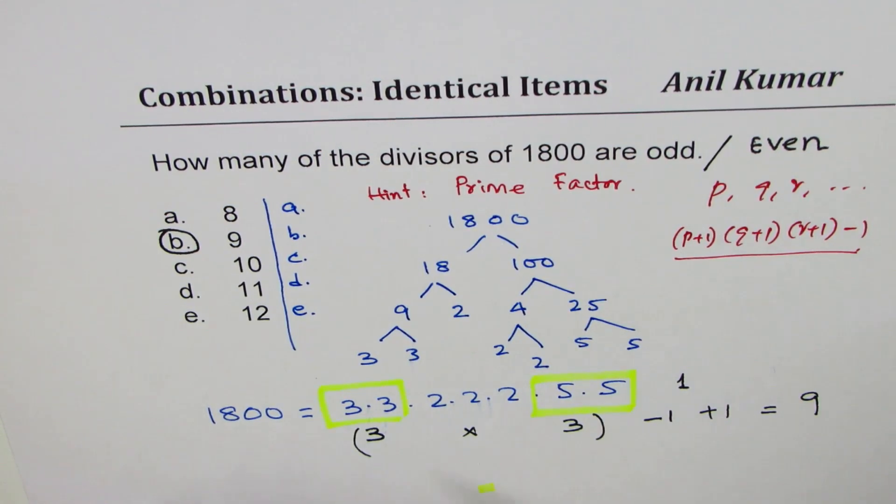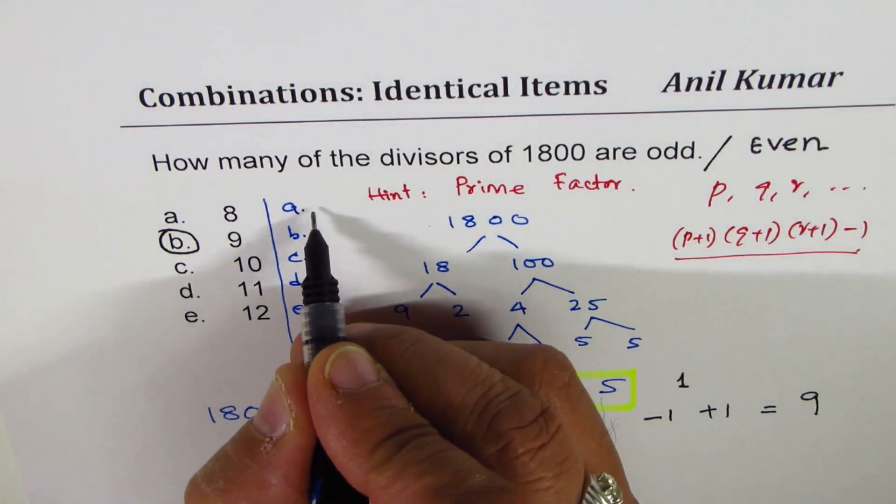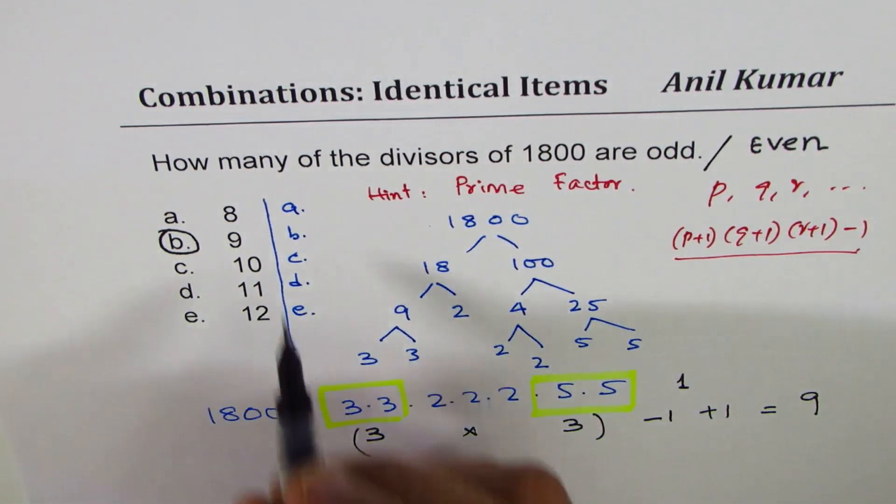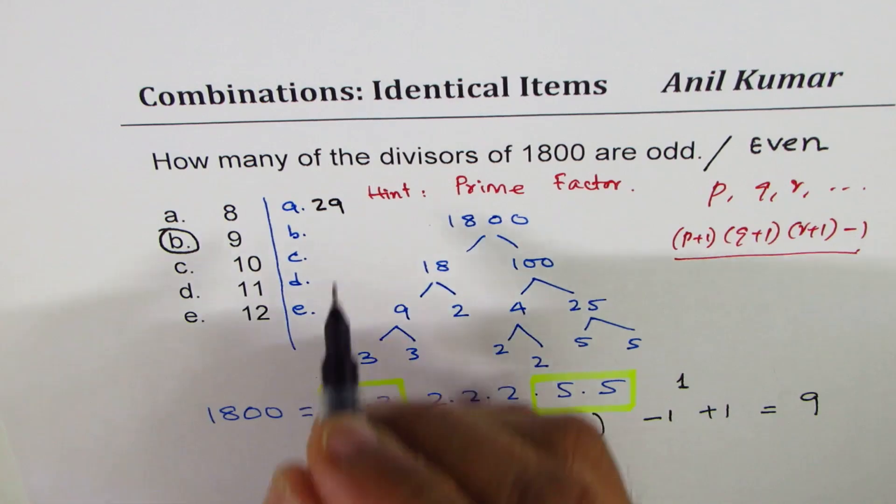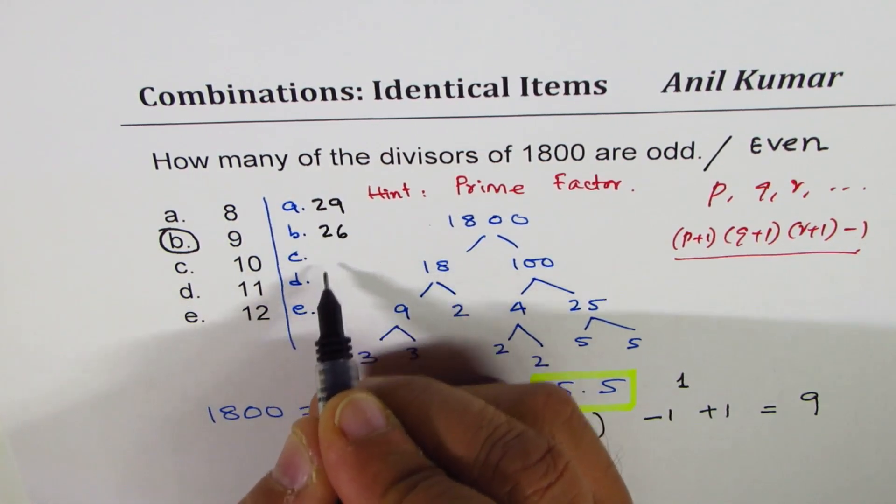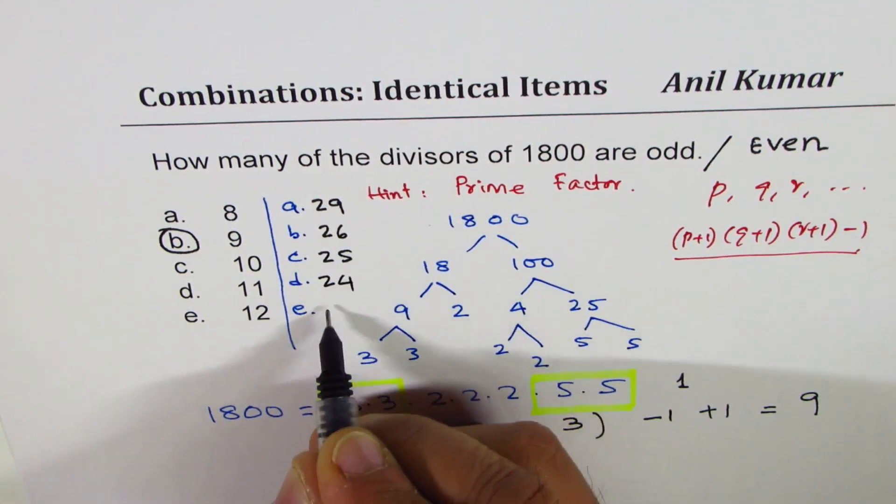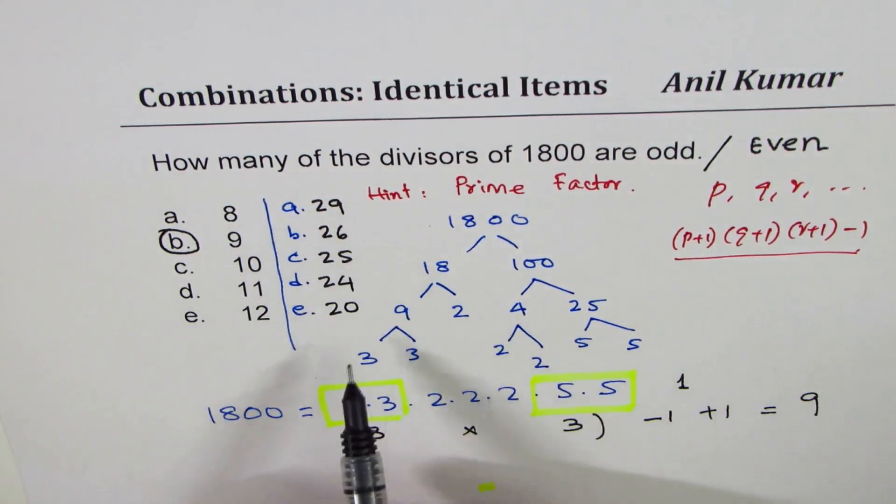Even numbers are much more since we have so many 2's. I know the answer, therefore I can write some numbers here which could be valid. So let's write 29, and then 26, 25, 24, and 20. So these are the choices for even. Okay, so these are the choices for even. Let me give a different color to it.